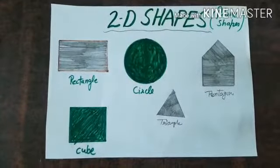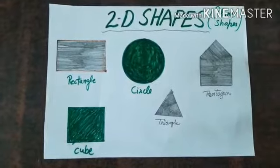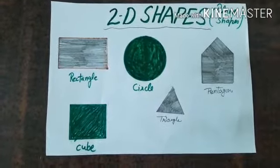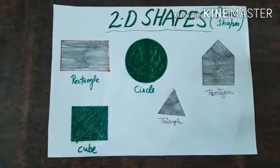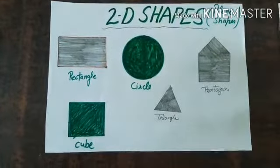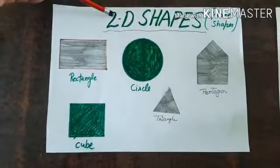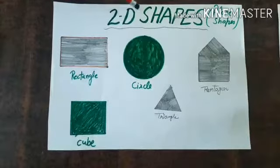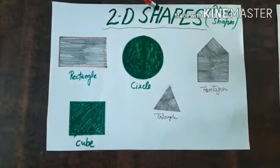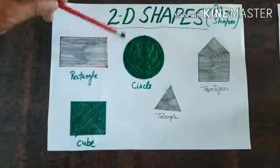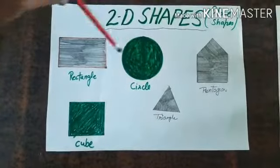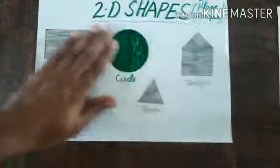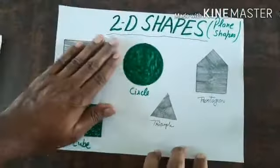First of all, I am going to explain 2D shapes. 2D shapes mean two-dimensional shapes, also called plane shapes. These are plane shapes.